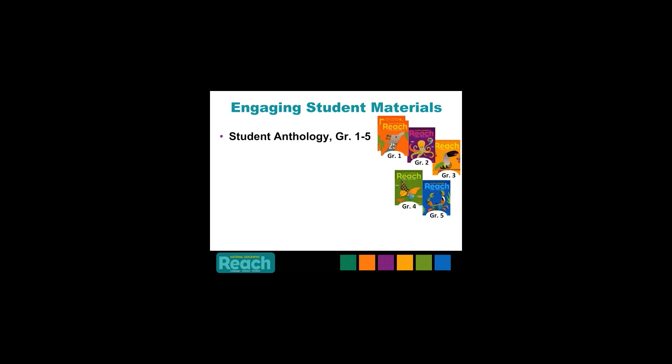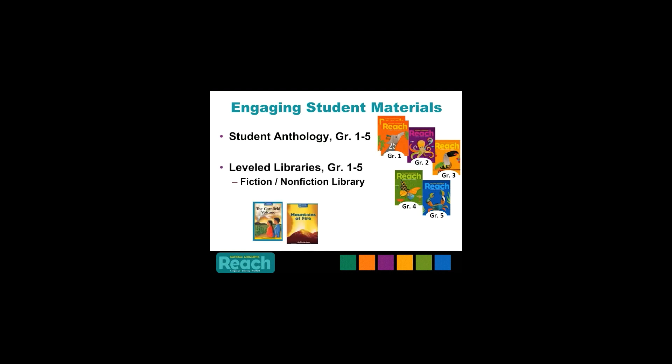Now let's take a look at the engaging student materials. At grades 1 through 5, each student will have their own student anthology, with two books at grade 1. If purchased, students will also have access to fiction and non-fiction libraries at grades 1 through 5, as well as National Geographic Explorer books at grades 3 through 5 to support extended reading. All books are thematically linked to the content in each unit.